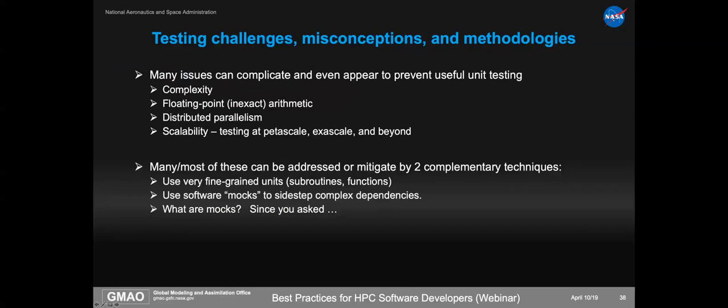The first one is complexity — is our software so complex that unit testing is a problem? The next problem is the fact that we deal with floating point arithmetic, and this is certainly something which is somewhat unique to technical computing — not necessarily just climate or weather science. Engineering has this issue as well, but large swaths of the commercial software engineering community do not face this issue. Then there's distributed parallelism, which we have to deal with in almost all of our code. And there is the issue of scalability, since we're talking in an exascale series — we want to be able to do testing of exascale software, and that poses some additional challenges.